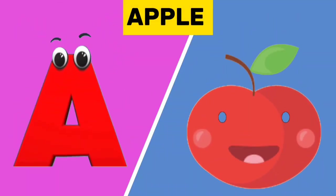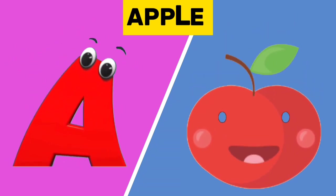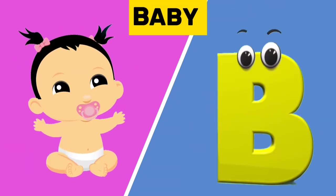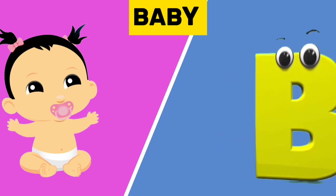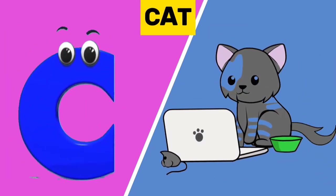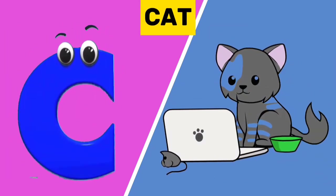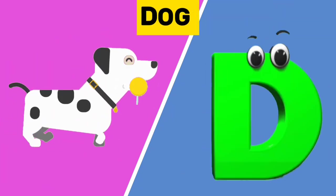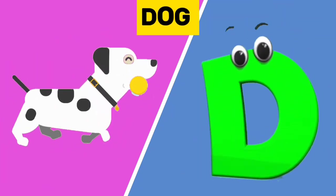A is for apple. A, a, apple. B is for baby. B, b, baby. C is for cat. C, c, cat. D is for dog. D, d, dog.